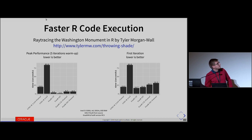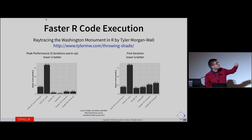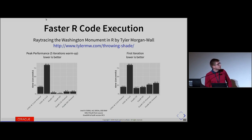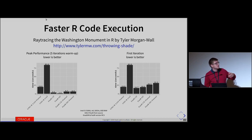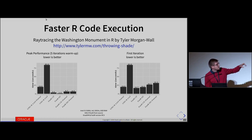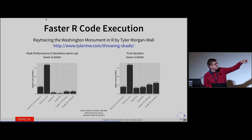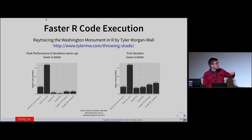These are the results on a lower-is-better chart of execution time. The left side is peak performance after warm-up; the right side is the first iteration. FastR is really good at long-running tasks because it needs a little warm-up, but after warm-up it can be really good. GnuR running only R code — the Fortran routine replaced with R code — runs in about 84 seconds. FastR on the Enterprise Edition runs in 1.5 seconds. That's something like 60 times faster.